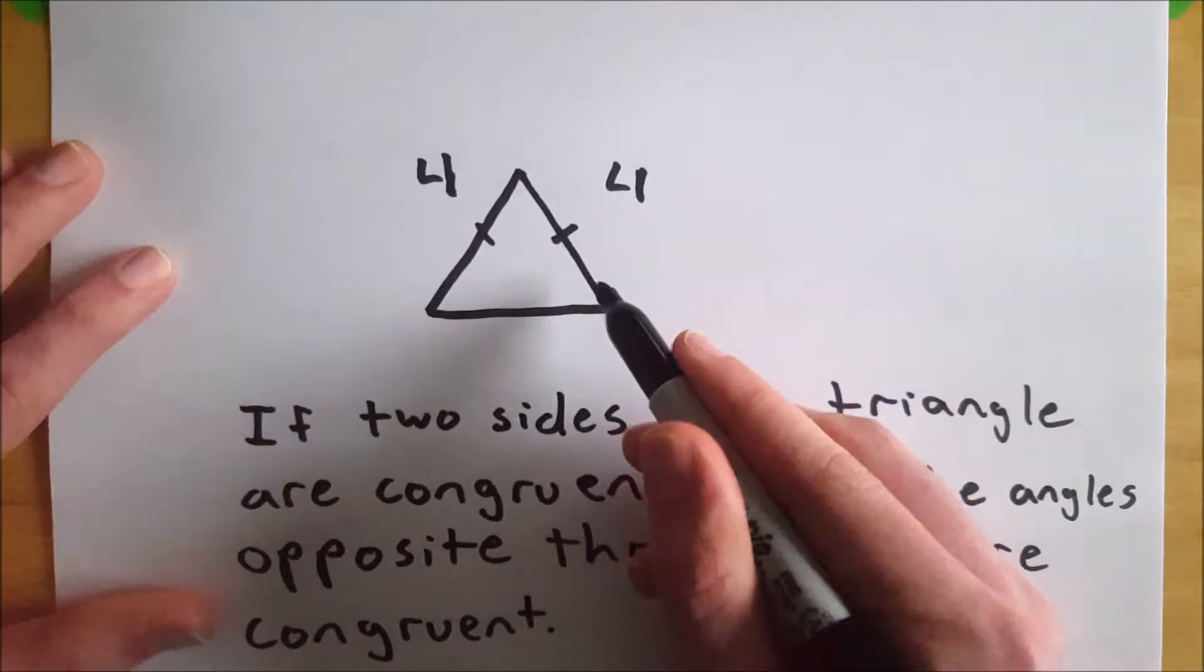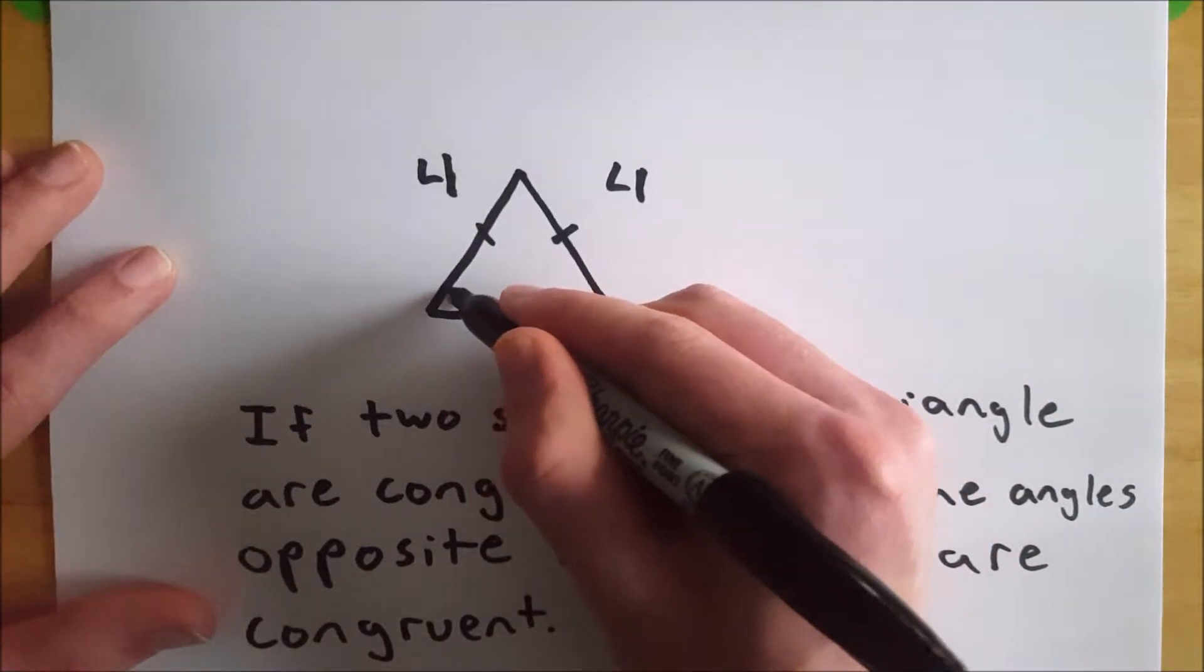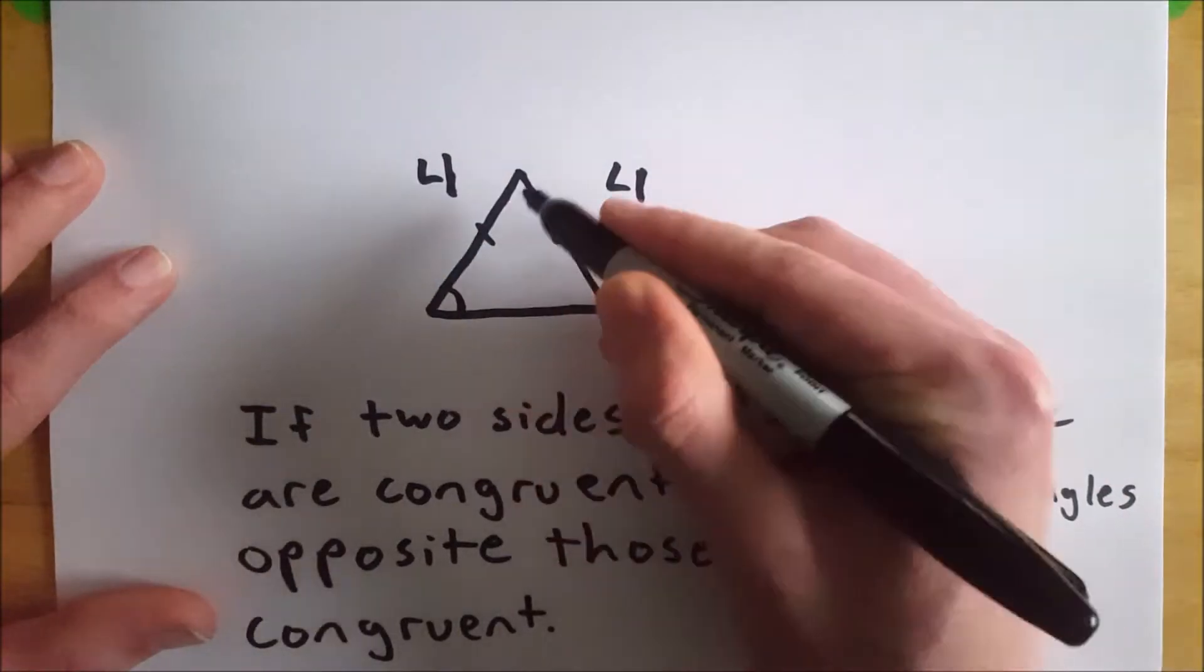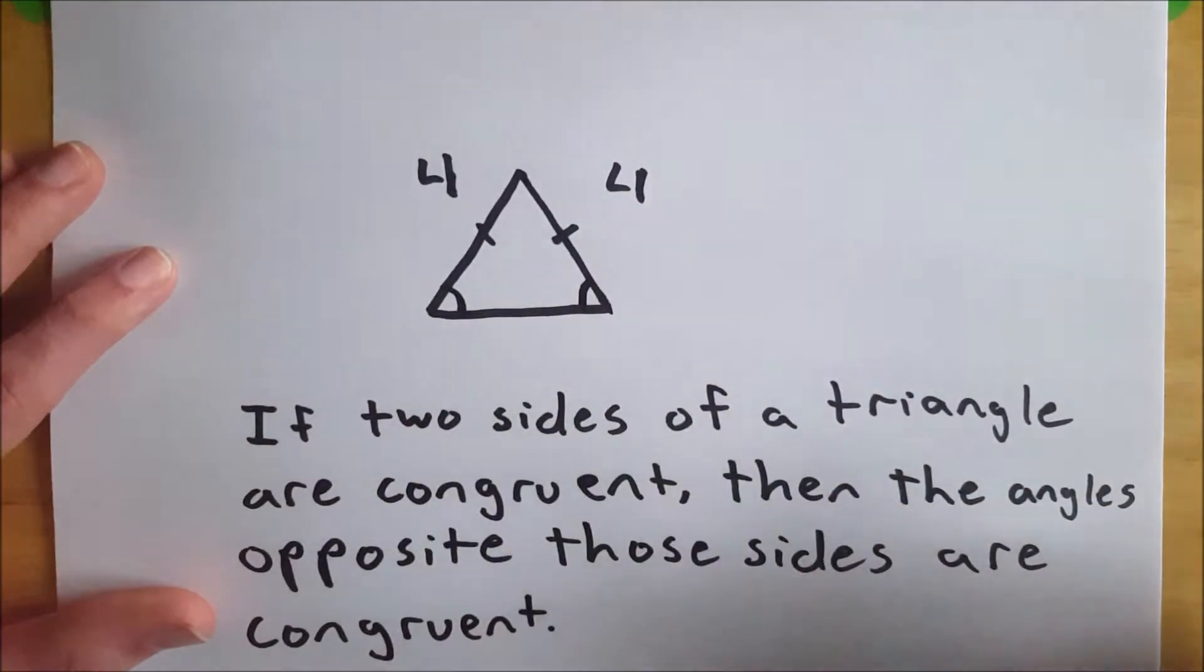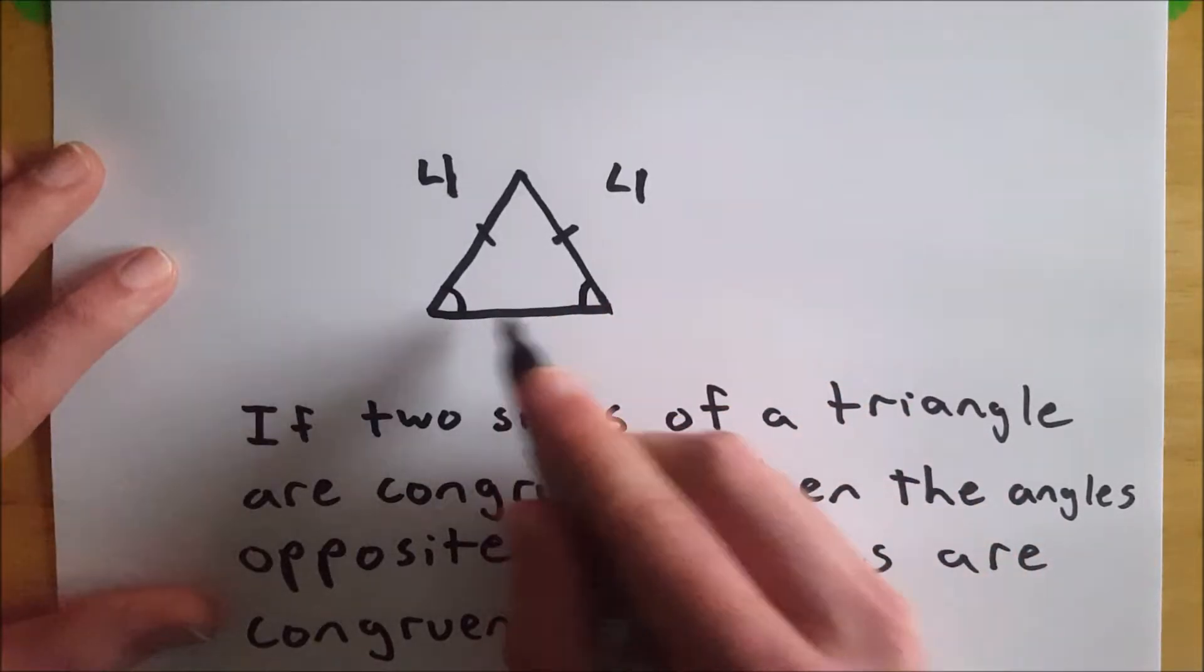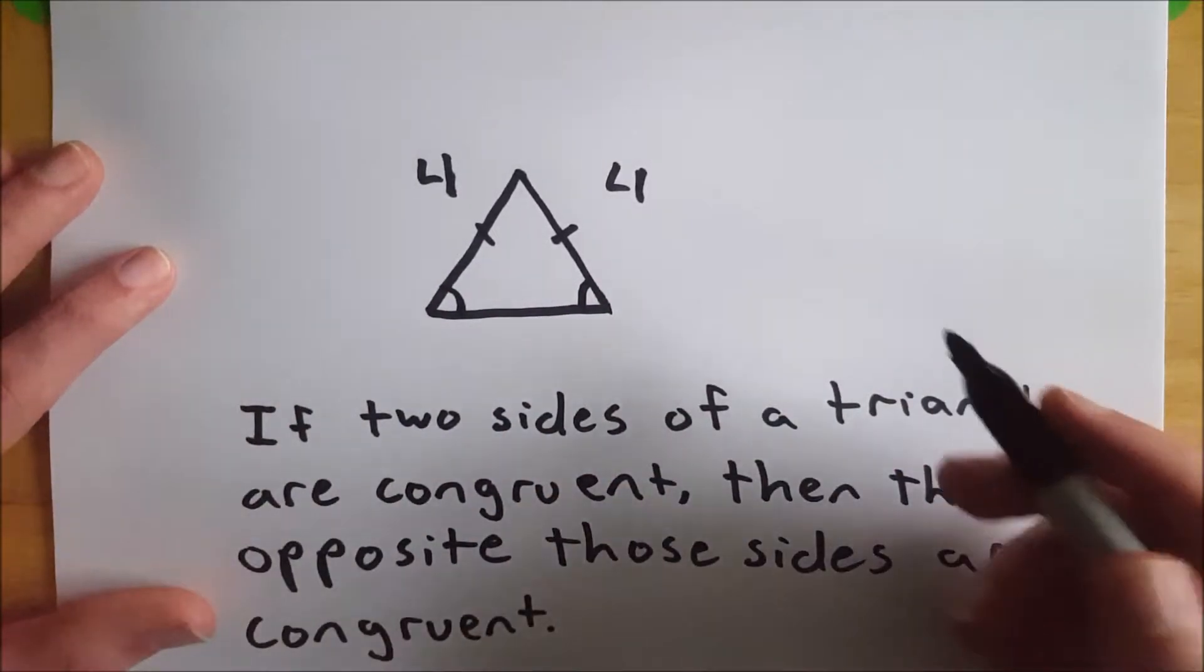The angle opposite this side is this angle here, and the angle opposite this side is this angle here. So by the isosceles triangle theorem, these two angles are congruent.